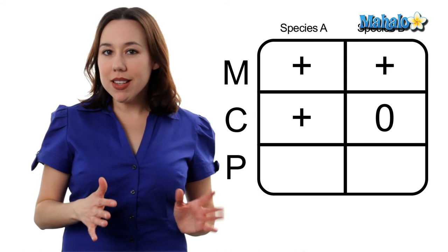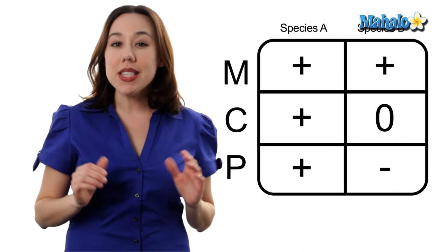Now, parasitism. We're going to write a plus for species A and a minus for species B, because in this type of interaction, one species benefits while the other species is harmed. In parasitism, we see examples all over the place, many that we have to deal with each and every day, things like lice and bedbugs.